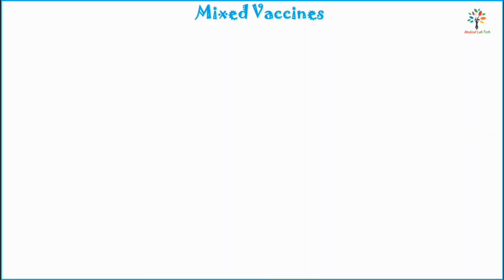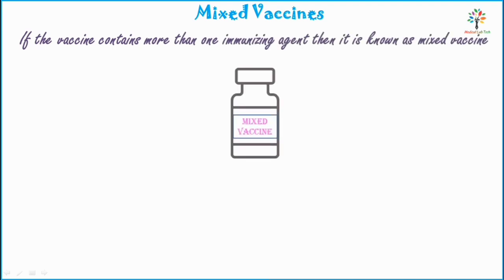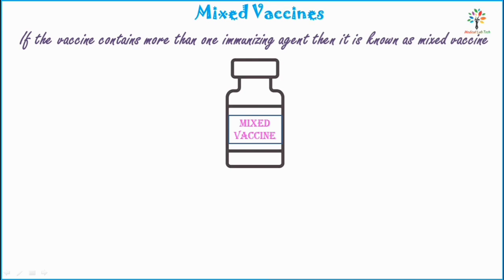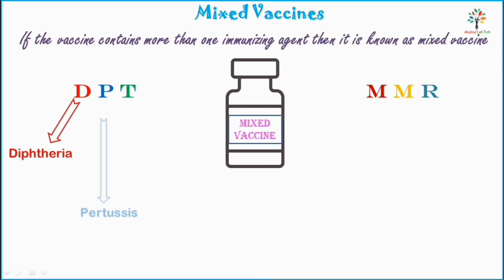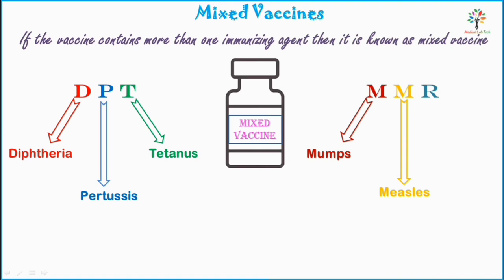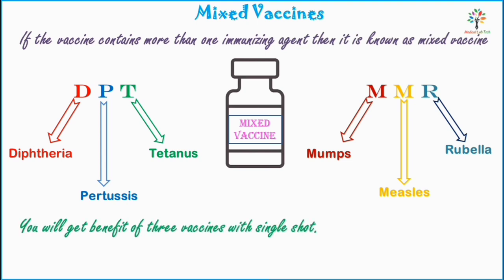Next is the mixed vaccine. If a vaccine contains more than one immunizing agent, it is known as a mixed or combined vaccine. DPT and MMR are examples of mixed vaccines, and both contain a combination of three vaccines. In DPT: D stands for diphtheria, P for pertussis, and T for tetanus. In MMR: the first M stands for mumps, the second M for measles, and R for rubella. With DPT and MMR, you get the benefit of three vaccines with a single shot.